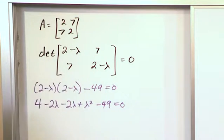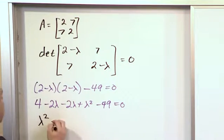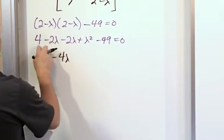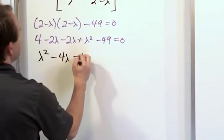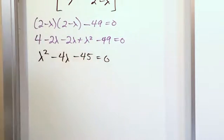Okay and so then we just basically simplify: lambda squared. This is going to give us minus 4 lambda and then this is going to give us minus 45 and that's equal to 0.